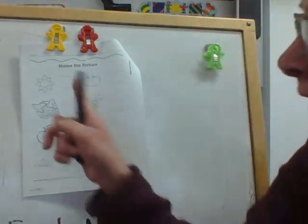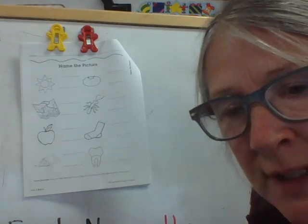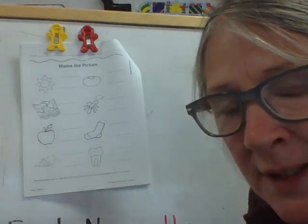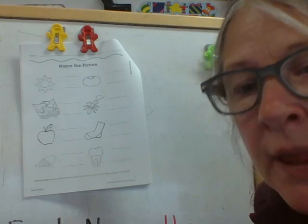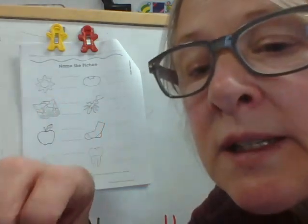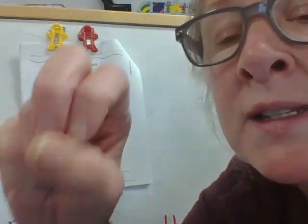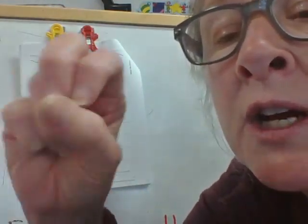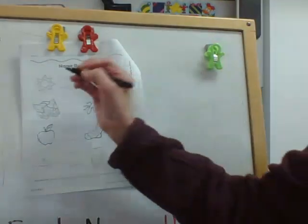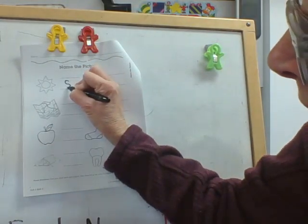Let's start with the first picture. It is a picture of a sun, so we're going to bounce on sun. Sun. Sun. Sun. It's the letter sneaky S. Little curve and then back around.